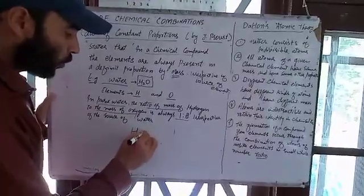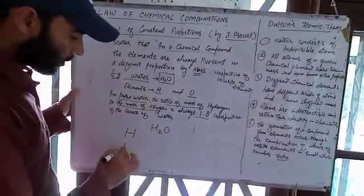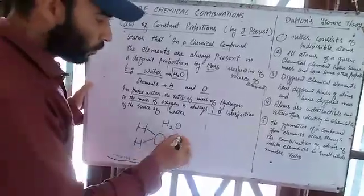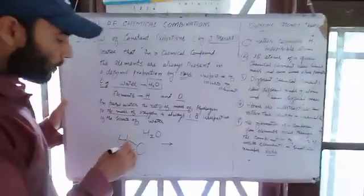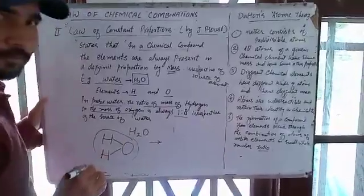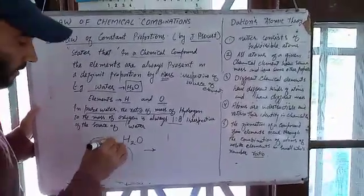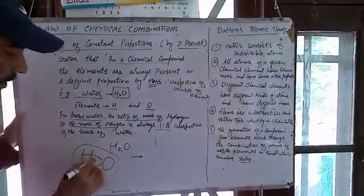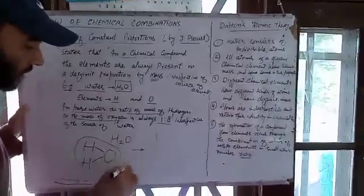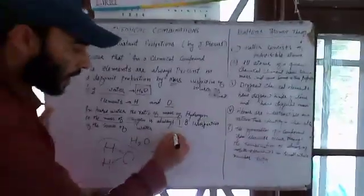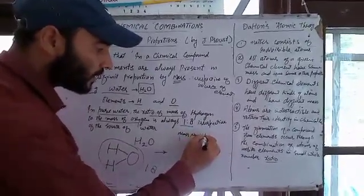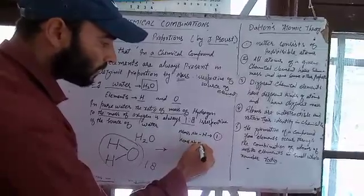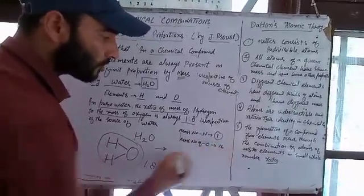Water H₂O has two hydrogen atoms and one oxygen atom. If we calculate the mass of the water molecule, we always reach the conclusion that the ratio of hydrogen to oxygen is 1:8. The mass number of hydrogen is 1 and the mass number of oxygen is 16.